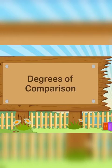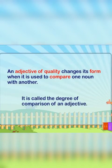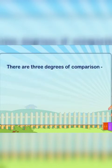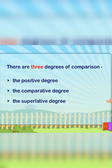Degrees of comparison. An adjective of quality changes its form when it is used to compare one noun with another. This is called the degree of comparison of an adjective. There are three degrees of comparison: the positive degree, the comparative degree, and the superlative degree.